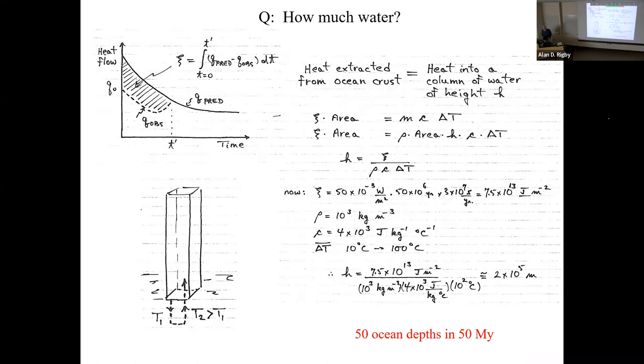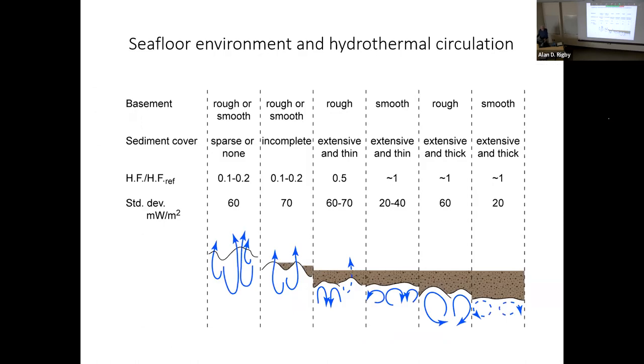The height of a water column is 200 kilometers. The average ocean depth is four kilometers. That's 50 ocean depths going through the crust in 50 million years. So all the water on top of a piece of crust goes through its crust every million years. John Bowman tells me that's the biggest water-rock interaction on Earth.